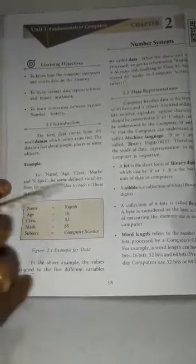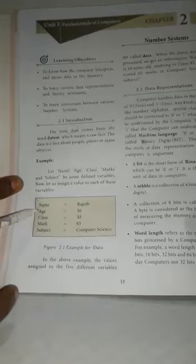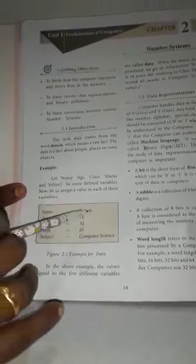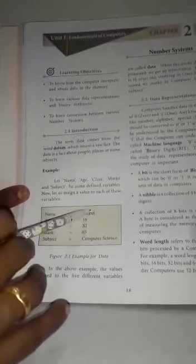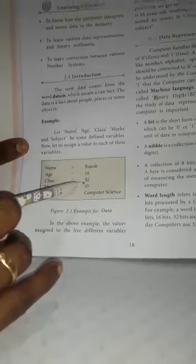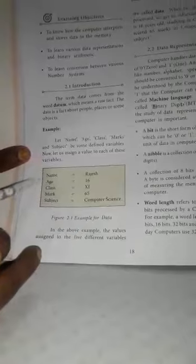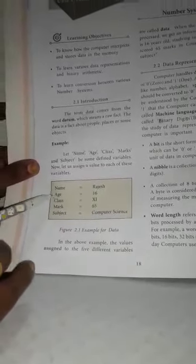Here, name, age, class, mark, and subjects are variables. The values means name equal to Rajesh, so Rajesh is a value. 16 is a value, 11th is a value, 65 is a value, and computer science is a value. This is the variable.